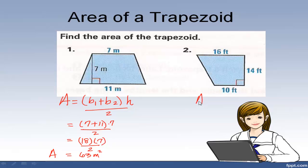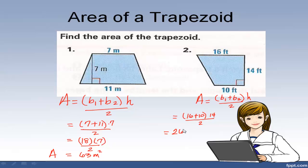For this one, let's write our formula: B sub 1 plus B sub 2 times height, everything over 2. The two bases are 16 and 10. So 16 plus 10 times the height, which is 14, divided by 2. 16 plus 10 is 26, times 14 divided by 2: 14 divided by 2 is 7... actually, 4 divided by 2 is 2, and 2 times 26 is 52 square feet.